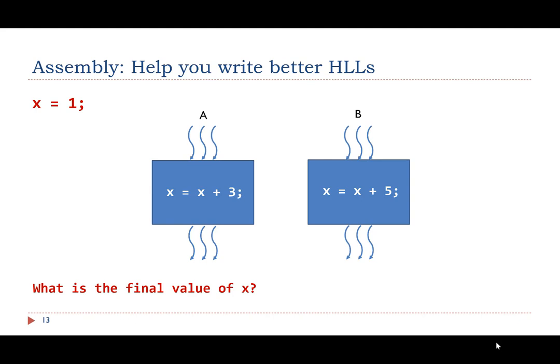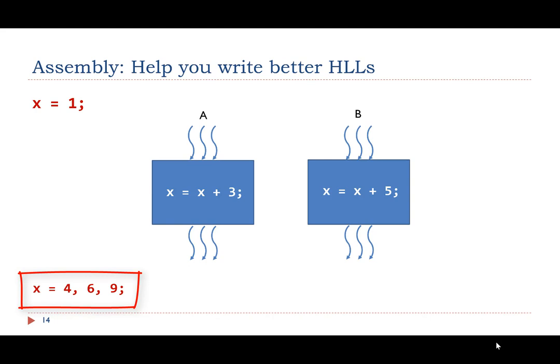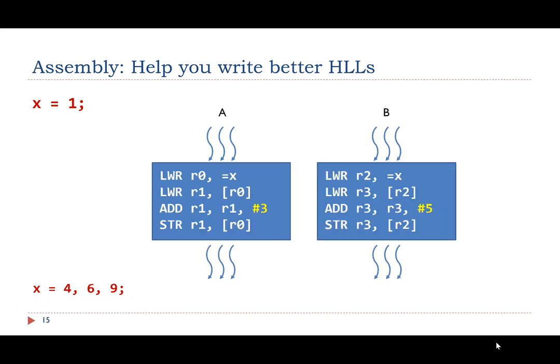Let me give another example to show that assembly helps us understand high-level languages better. Suppose the initial value of the global variable x is 1. We have two tasks, A and B, which run concurrently — they might be two interrupt handlers or two threads in an OS or RTOS. The question is: what is the final value of x? The answer is not simple; at the end, x might be 4, 6, or 9. These two C operations are not atomic, which becomes obvious when we translate them into assembly. In the assembly code, each task reads the x value from memory, then adds 3 or 5 to x, and finally writes the result back to memory — a sequence of load, modify, and store operations.